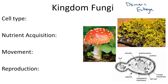Fungi have a little bit more complexity than protists. So let's define them on the left. Their cell type is eukaryotic, meaning they have complex cell structures such as a nucleus and membrane-bound organelles like mitochondria.